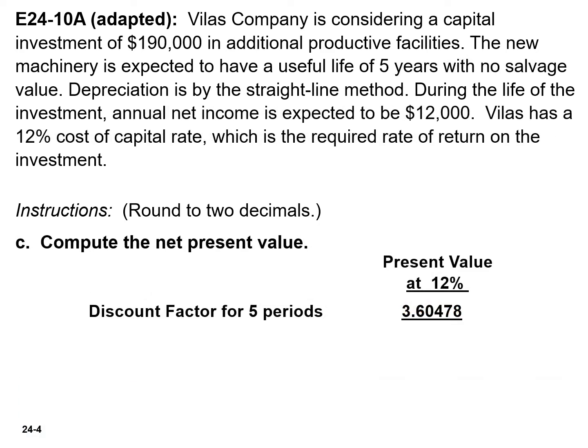The machine has a useful life of 5 years, and the cost of capital is 12%. So the PV factor is 3.60478.